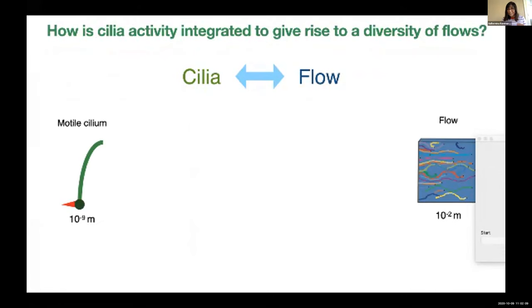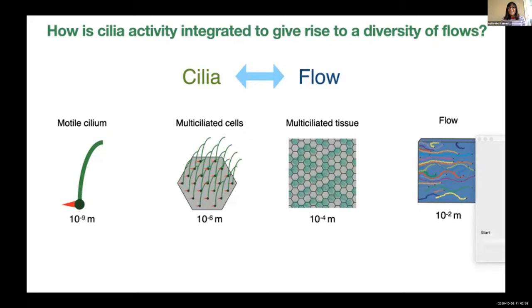This is inherently a multi-scale problem. A motile cilium is a cellular organelle, roughly 10 to 20 microns in length. All the proteins that make up that cilium are at the nanometer scale — the motors activating microtubules to generate the cilia beats are nanometers in scale — but those organisms need to generate flows at the centimeter scale. I'm really interested in studying what happens in between and how you connect these length scales, because cilia organization occurs at all these different length scales and is tightly regulated in all systems.